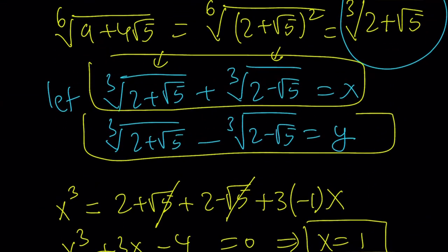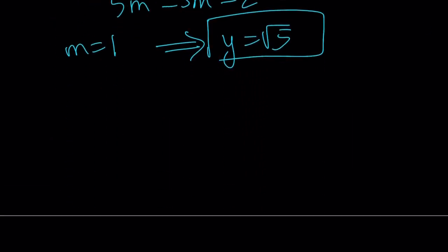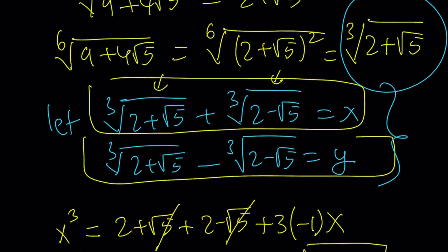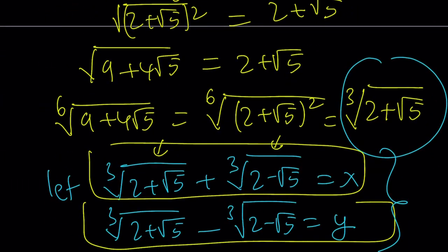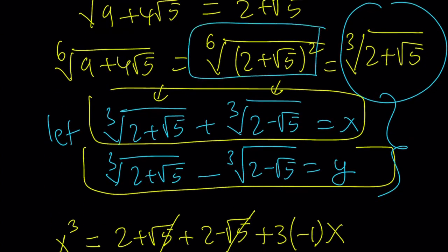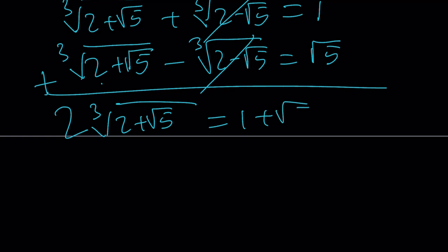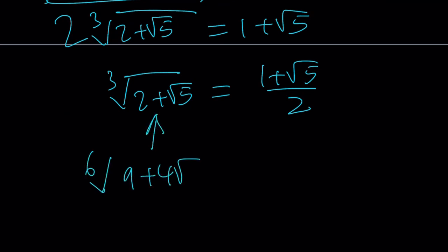Let's go ahead and rewrite this. Remember, we started off with a system in x and y. We have cube root of 2 plus root 5 plus cube root of 2 minus root 5 is equal to x, and x is equal to 1. And the second one is cube root of 2 plus root 5 minus the cube root of 2 minus root 5, and that is equal to y, which is square root of 5. I'm trying to find the cube root of 2 plus root 5 because, remember, after doing the 6th root of something squared, I ended up with a cube root. That's what I was trying to find. So let's go ahead and add these up. They cancel out. We get the cube root of 2 plus root 5 two times, and that's equal to 1 plus root 5. If I divide both sides by 2, then I get cube root of 2 plus root 5 is equal to 1 plus root 5 over 2. And let's just remember that this was the 6th root of 9 plus 4 root 5.